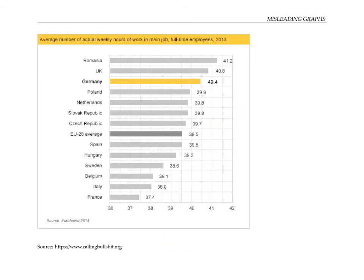Take a look at this bar graph showing the average number of weekly hours worked for a variety of European countries. What might be misleading about it? Doesn't it give the impression at first glance that people in France have way less hours of work each week than people in Romania — like on the order of maybe a third as much — until you see the numbers and realize it's maybe just 10% less.